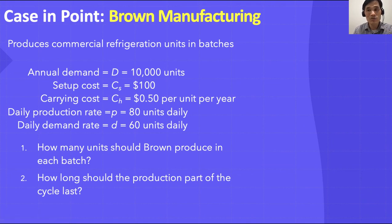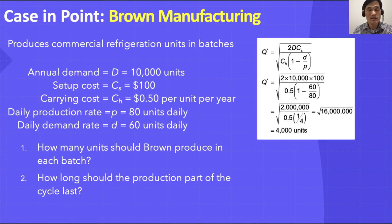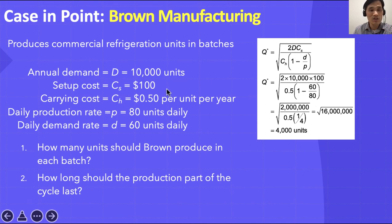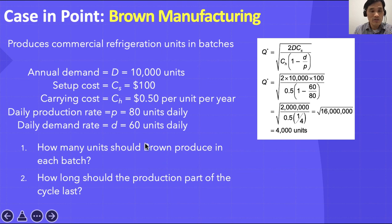To find Q*, we use the formula: square root of (2 × D × Cs) / (Ch × (1 − d/p)). Plugging in — annual demand 10,000, setup cost $100, carrying cost $0.50, and (1 − 60/80) — gives us 4,000 units. So the answer to the first question is that Brown should produce 4,000 units per batch.